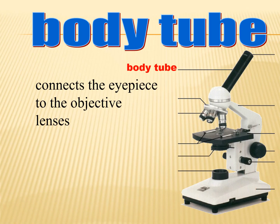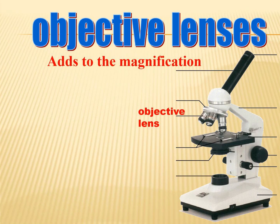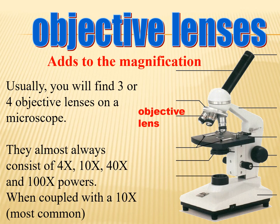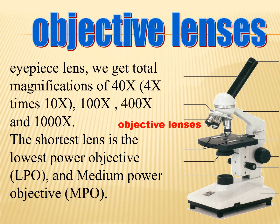The body tube connects the eyepiece to the objective lenses. The revolving nosepiece holds two or more objective lenses and can be rotated to easily change magnification power. Usually, you will find three or four objective lenses on a microscope — almost always 4x, 10x, 40x, and 100x. When coupled with the common 10x eyepiece lens, we get total magnifications of 40x, 100x, 400x, and 1000x.